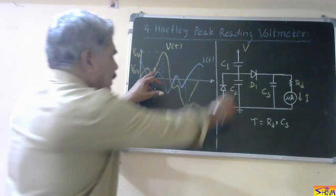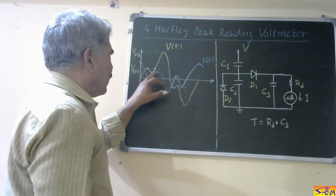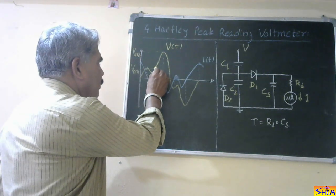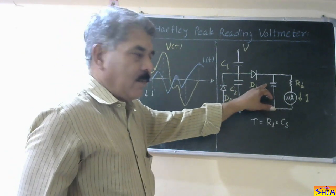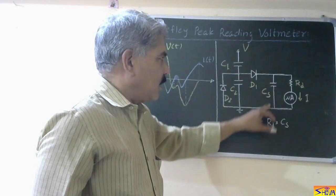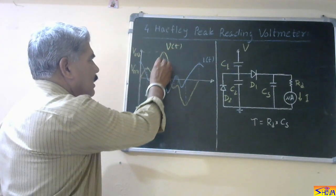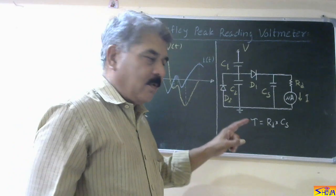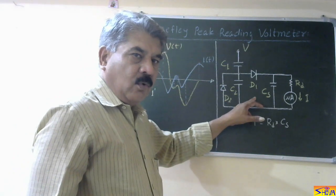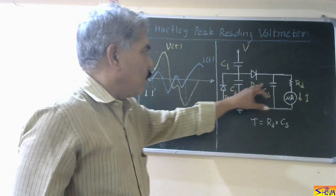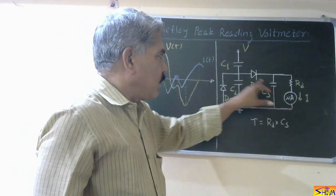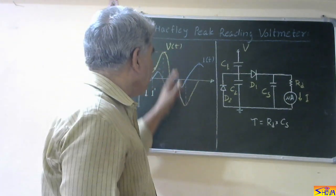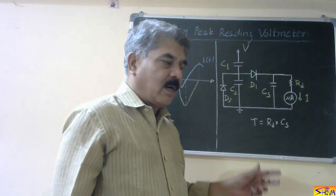The voltage across the capacitor remains Vm1 while the source voltage changes from Vm1, reduces, and again goes back to Vm1. Diode D1 remains reverse biased. As soon as the voltage crosses Vm1 and becomes more than Vm1, diode D1 starts conducting and charging of Cs takes place. Finally, Cs charges to voltage Vm2, which is the actual true maxima. Then the voltage starts reducing, the voltage becomes less than the capacitor voltage, so the diode becomes reverse biased. Therefore, the storage capacitor charges to voltage Vm2 — the true maxima.